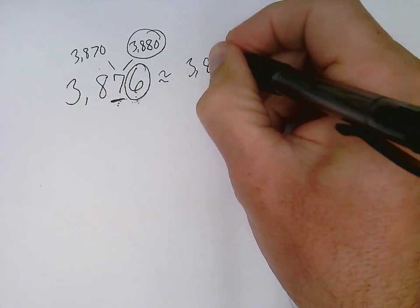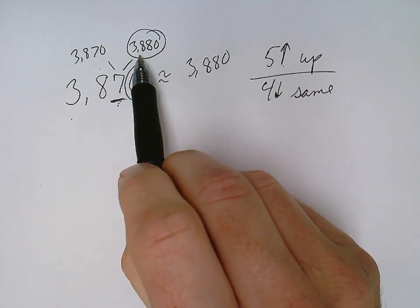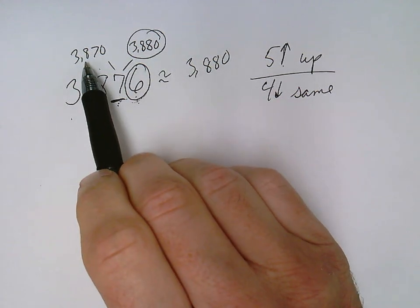So this means that 3876 is closer to 3880 than it is to 3870.